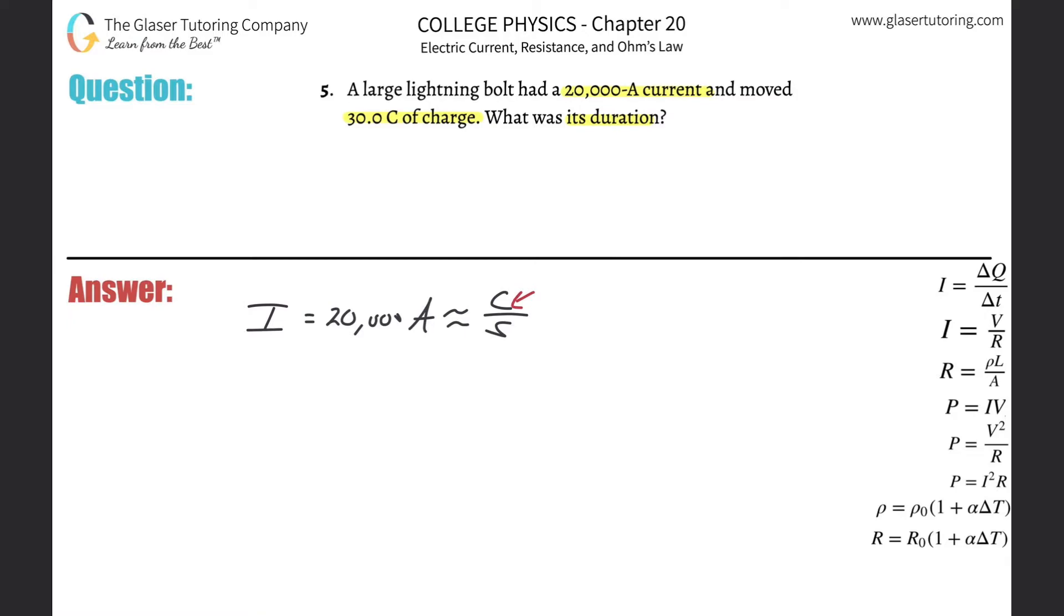It also told us how much charge passed through. In other words, Q equals 30 coulombs worth of charge passed through, and they want to know how long it was.